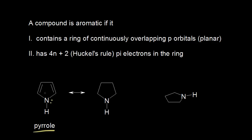The pyrrole molecule has five atoms in the ring. If we take a look at the carbons in the ring, we can see that those carbons all have a double bond to them. Therefore, each of those carbons is sp2 hybridized, meaning each of the carbons has a free p orbital. So I can go ahead and draw a free p orbital on each of those four carbons.